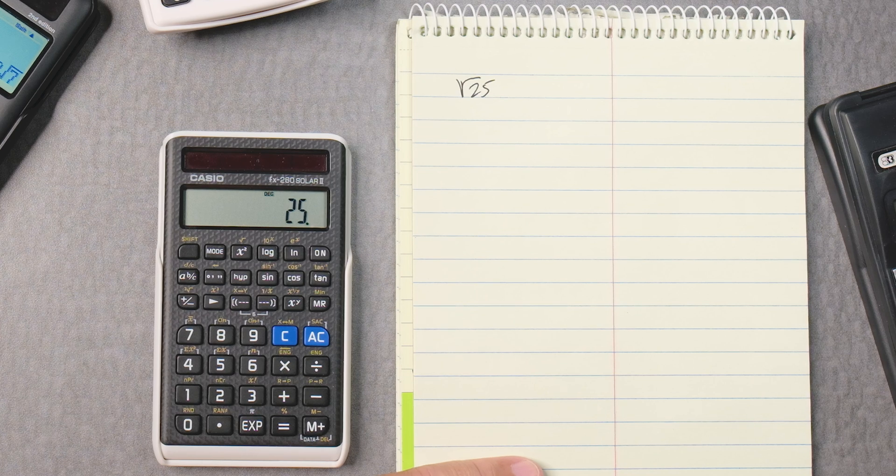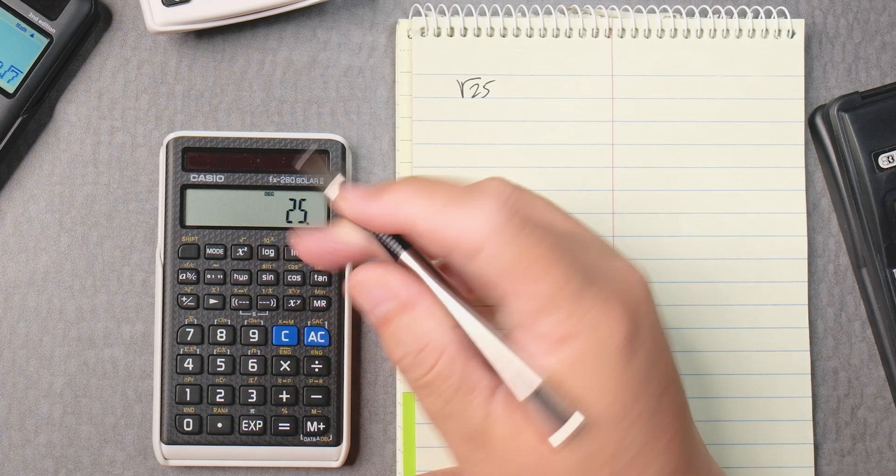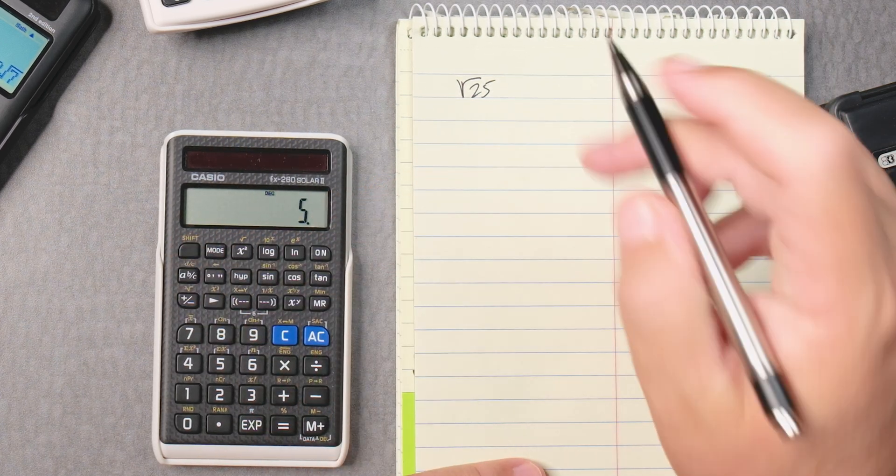So you type in 25, right? You find the square root, which is somewhere right here above the x squared. So shift x squared gives you 5.